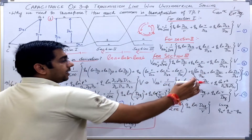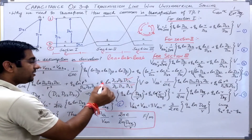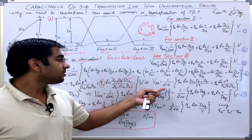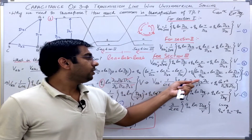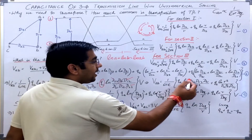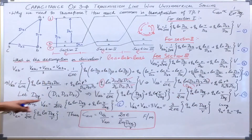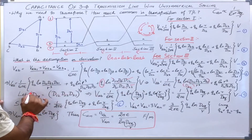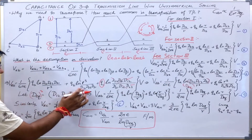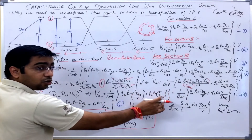Since D23·D31·D12 divided by D23·D31·D12 equals 1, the Q_C term is 0. So V_AB = 1/(6πε) · [Q_A·ln(D12·D23·D31 / R³) + Q_B·ln(R³ / D12·D23·D31)]. Now if I define D_equivalent as the cube root of D12·D23·D31, then D12·D23·D31 = D_eq³, so the expressions become ln(D_eq/R)³ and ln(R/D_eq)³ respectively.